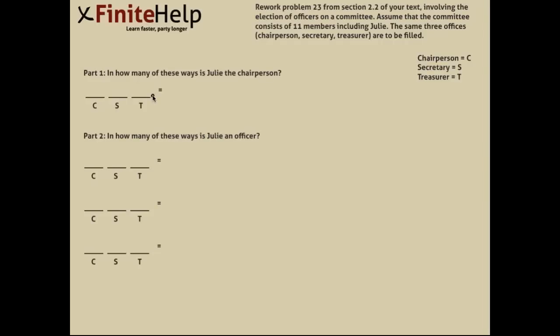Okay, the posted problem reads: Rework Problem 23 from Section 2.2 of your text involving the election of officers on a committee. Assume that the committee consists of 11 members, including Julie. The same three offices—chairperson, secretary, and treasurer—are to be filled.